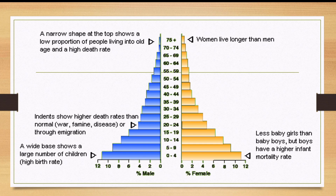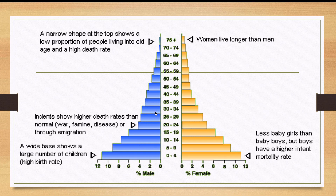The indents show a higher death rate — lots of youth are dying — indicating low life expectancy. Causes could include war or famine, diseases, or people leaving the country because of hardship and an unstable economic situation — that is emigration.